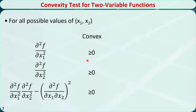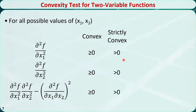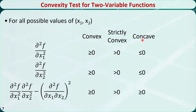If all three quantities are greater than or equal to 0 for all possible values of x1 and x2, then the two-variable function is convex. If they are all strictly greater than 0, then the function is strictly convex. If the first two are less than or equal to 0 and the last one is greater than or equal to 0, then the function is concave. If the first two are less than 0 and the last one is greater than 0, then the function is strictly concave.